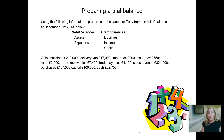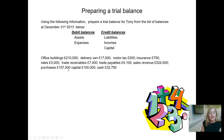Under liabilities we've also got trade payables. Tony owns office buildings worth £210,000, a delivery van worth £17,000, motor tax of £200, insurance of £750, rates of £3,000, trade receivables of £7,400, trade payables of £4,100, sales revenue of £324,000, purchases of £157,000, capital of £100,000, and cash of £32,750. I suggest you pause the video now and have a go at preparing a trial balance using your DEAR CLIP or DEAD CLIC mnemonic, and see if you can get it to agree.